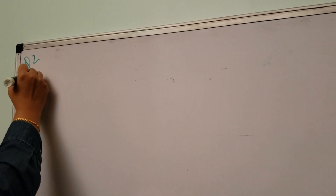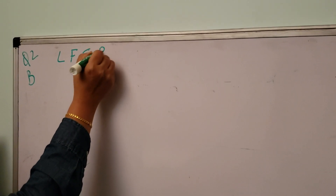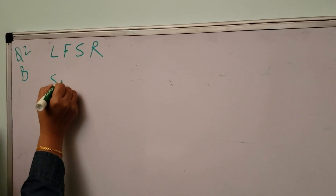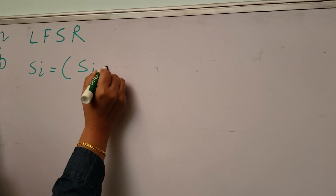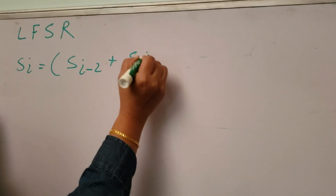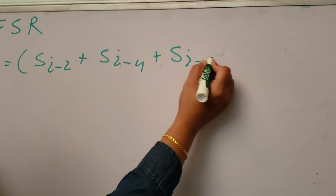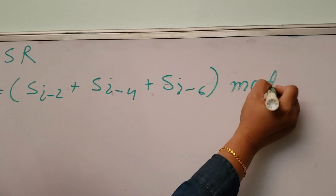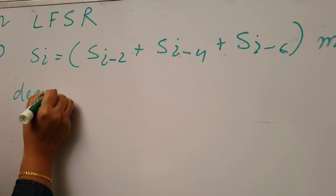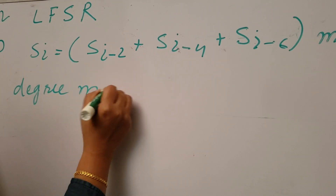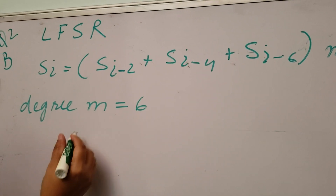Question 2, Part B: the linear feedback shift register is given by S(i) = S(i-2) + S(i-4) + S(i-6) mod 2. The degree m is equal to 6, so the maximum length would be calculated using this degree.